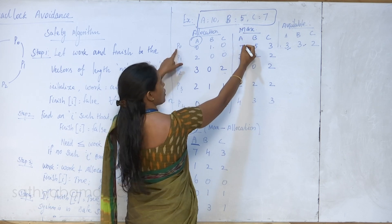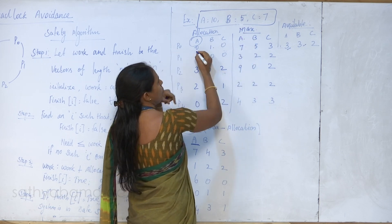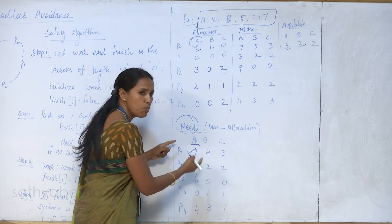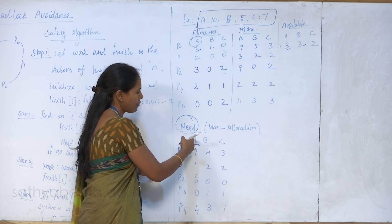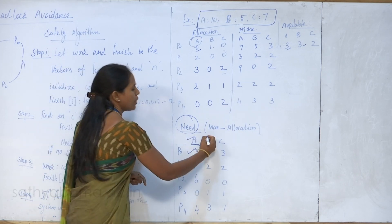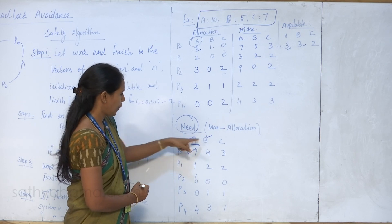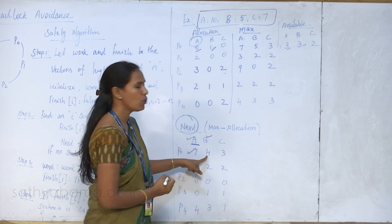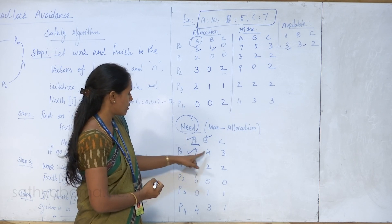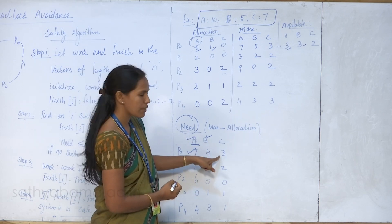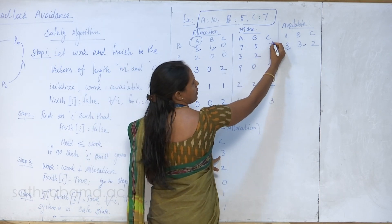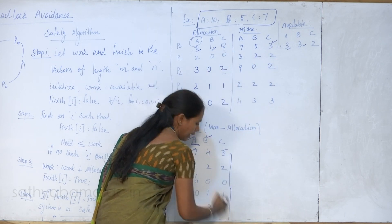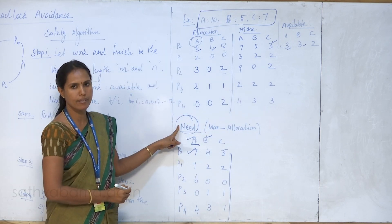For resource type B, process P0 requires 5 minus 1, so 4 resource instances of B are required. For resource type C, the maximum need is 3 and already allocated is 0, so 3 minus 0 equals 3. In that way, all entries have been calculated for the need matrix. As per Banker's algorithm, we have to check whether we can generate a safe sequence.